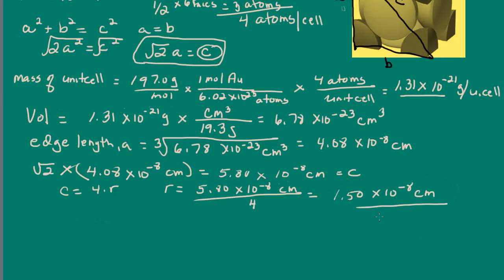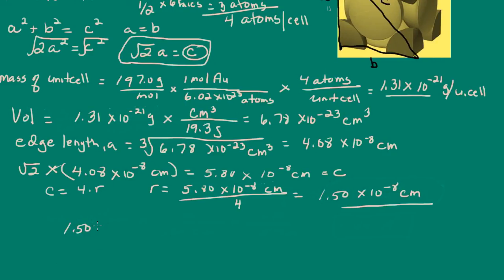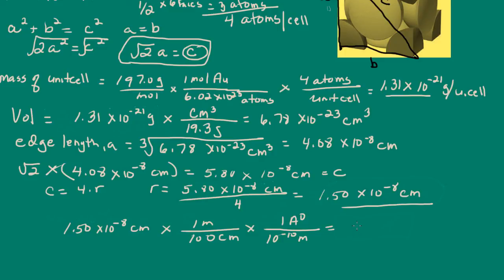Remember, we were asked to determine the radius in angstroms. So we'll convert 1.50 × 10⁻⁸ centimeters to angstroms. We know that 1 meter is 100 centimeters, and 10⁻¹⁰ meters is 1 angstrom. This gives us 1.44 angstroms. So from this data, the radius of a gold atom is 1.44 angstroms.